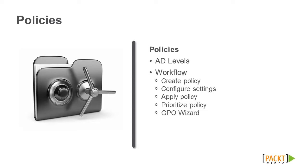The process for configuring policies is as follows: create the policy, configure the settings, apply the policy to filters, prioritize the policy, and verify the policy running the Citrix Group Policy Modeling Wizard.